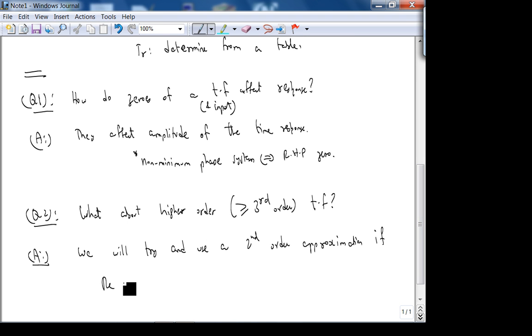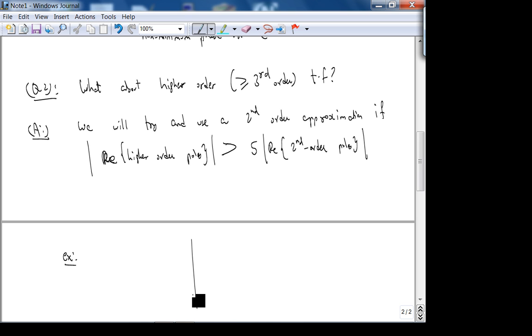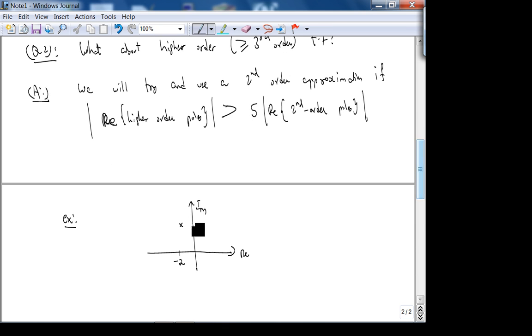If the real part of your higher-order poles, the magnitude is greater than five times the magnitude of the real part of your second-order poles. As a very simple example, let's say your second-order poles were somewhere over here. Negative two, square root of three j, minus square root of three j. Let's say your higher-order poles were negative 51, negative 50, something like that.